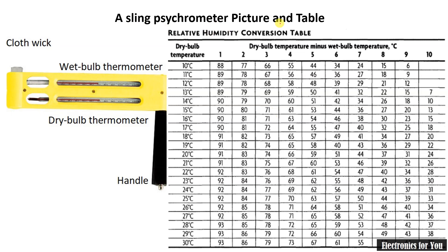This is a sling psychrometer picture and you can see the relative humidity conversion table. Let's say the dry bulb temperature is 20°C and the wet bulb temperature is 16°C. We find the row for dry bulb temperature of 20°C. The difference between dry bulb and wet bulb is 20 minus 16 equals 4°C, so we look at that column. The intersection of this row and column indicates 66% relative humidity. In this way we can measure humidity using a sling psychrometer.